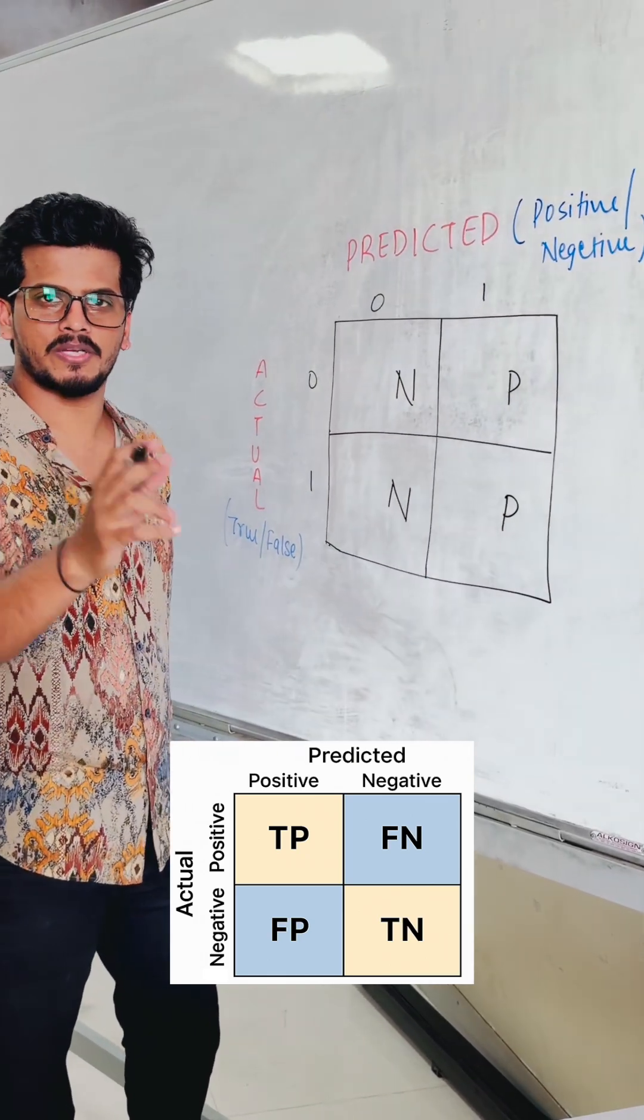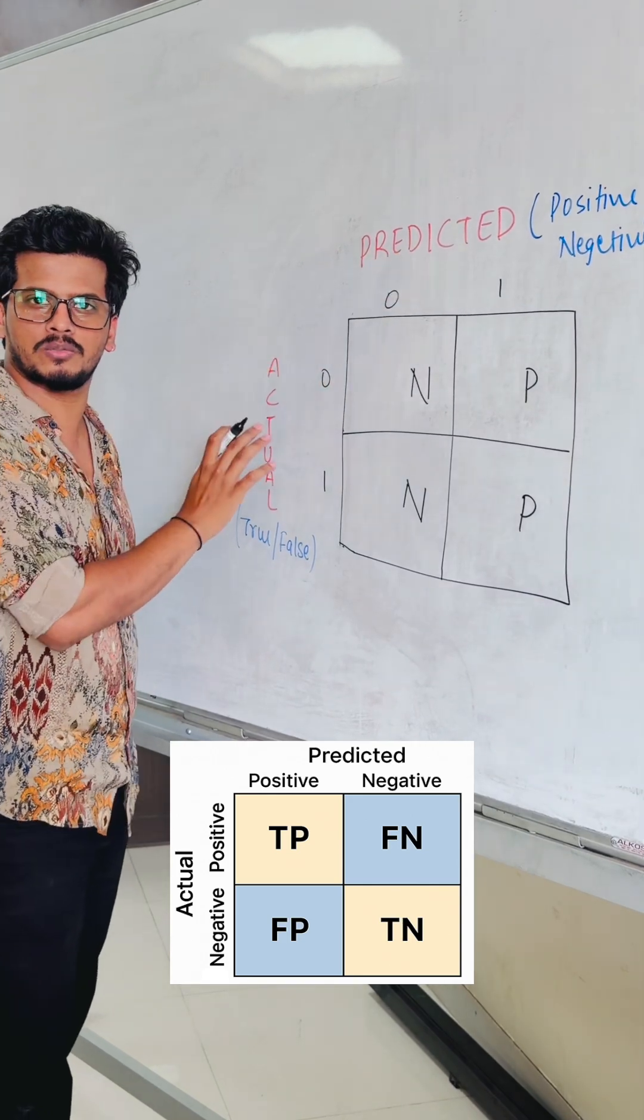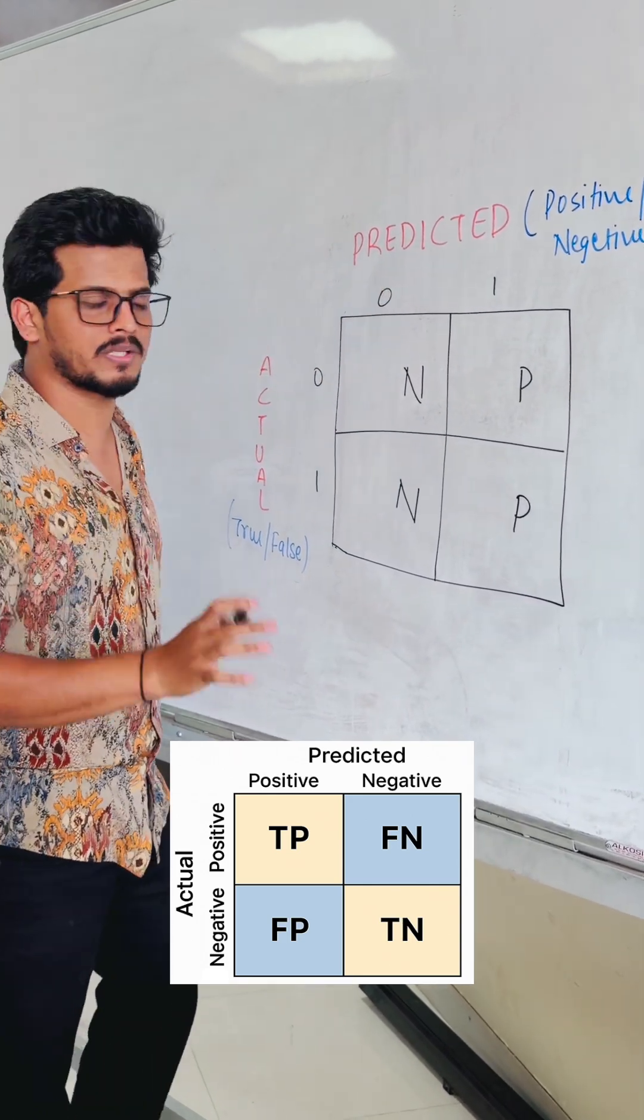Fine. So remember, the actual value comes first and then the predicted value. So the actual value followed by the predicted value will be the nomenclature.